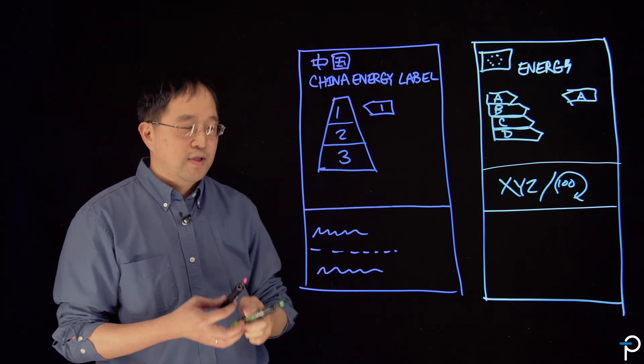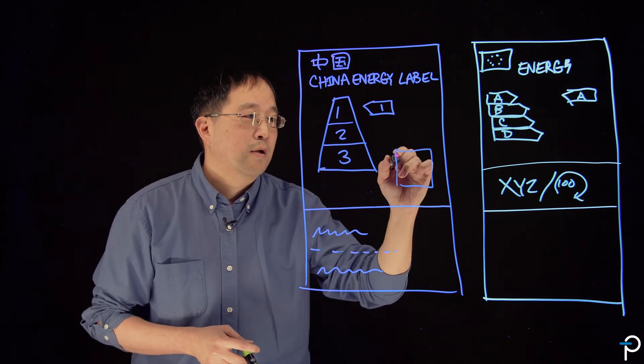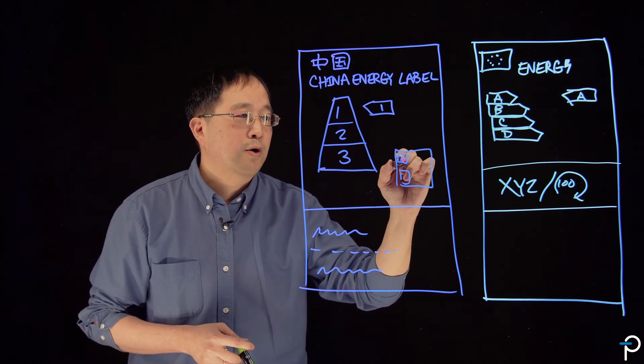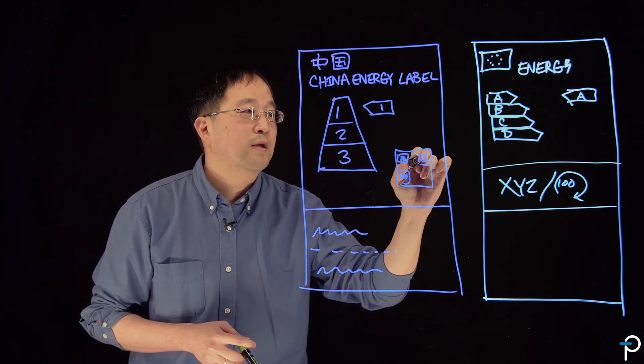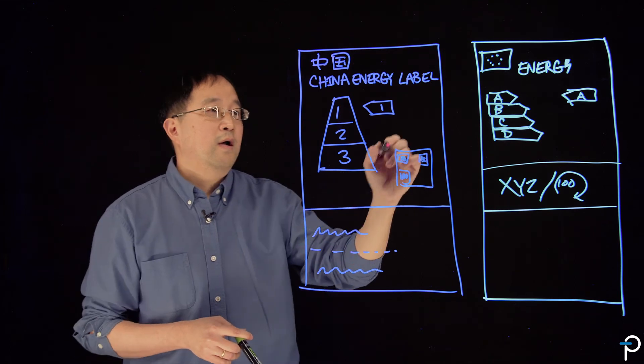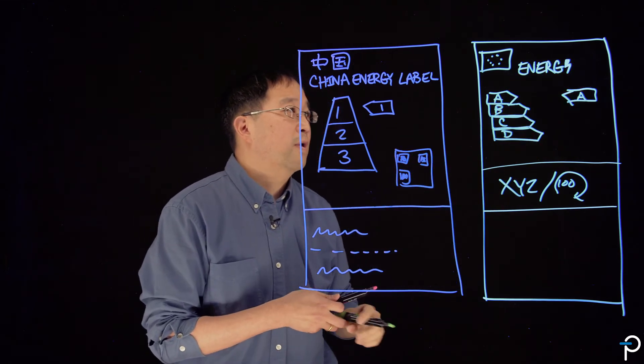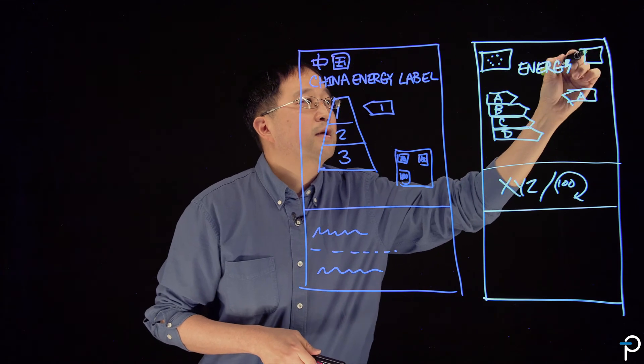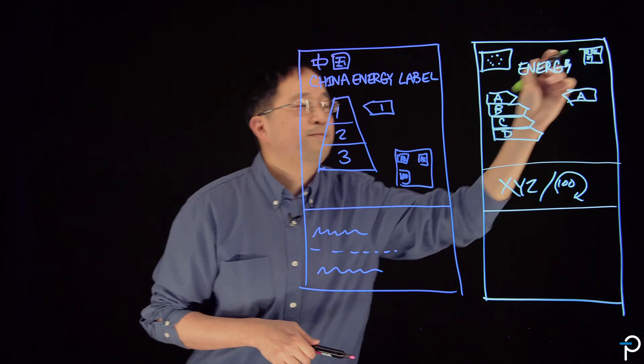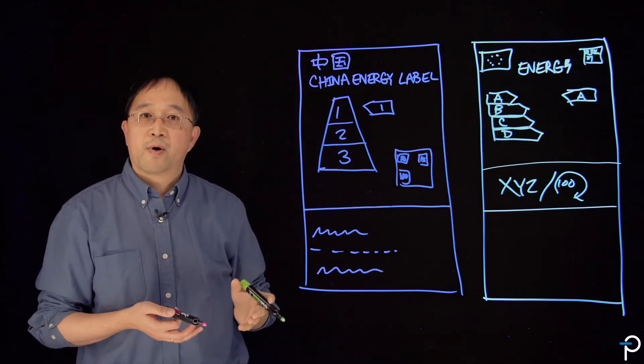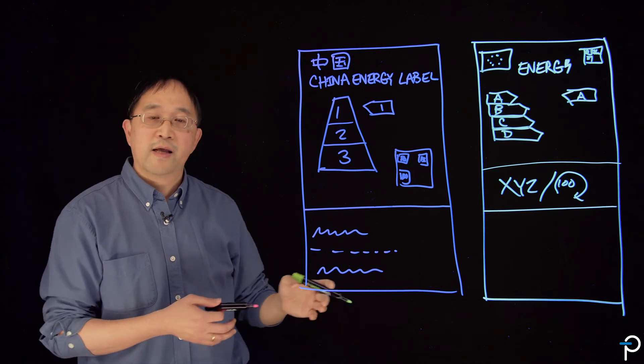Both labels have a QR code, and I'll just mark it this way, on the label as well. And the reason for having a QR code is that there needs to be some sort of database that keeps track of all the various products that have been registered to meet the labeling requirement.